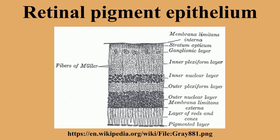Pathology. In the eyes of albinos, the cells of this layer contain no pigment. Dysfunction of the RPE is found in age-related macular degeneration and retinitis pigmentosa. RPE cells are also involved in diabetic retinopathy.